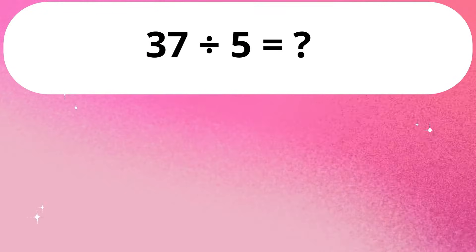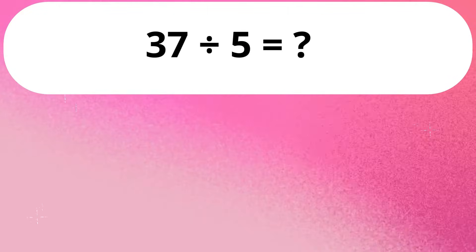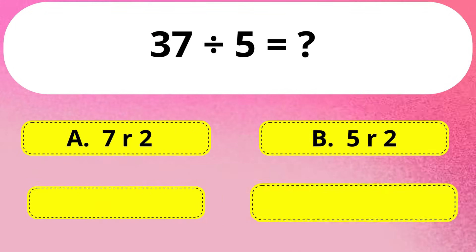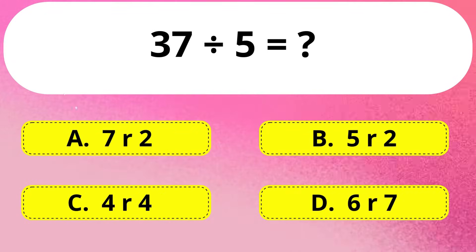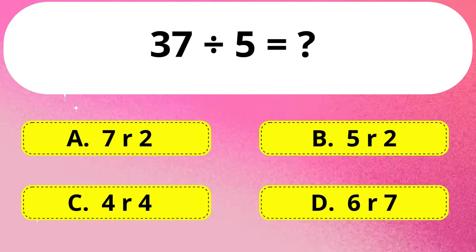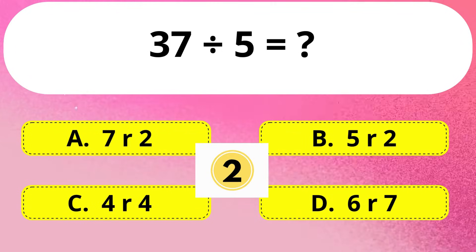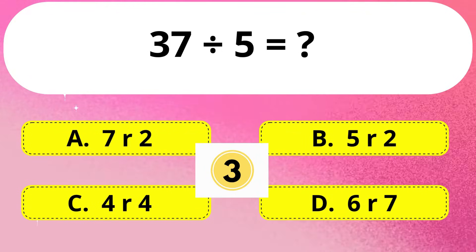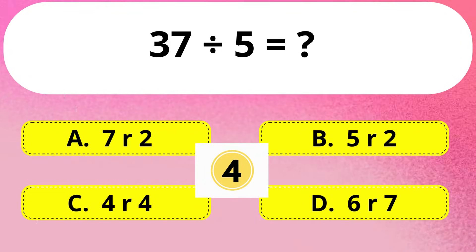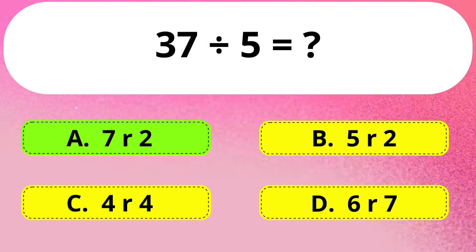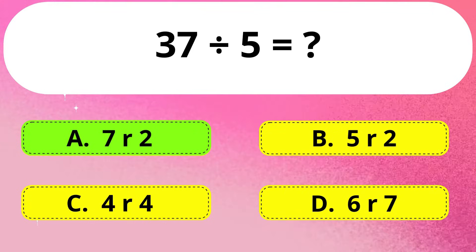Next question. 37 divided by 5 is equal to? Correct answer is Option A: 7, and the remainder will be 2.